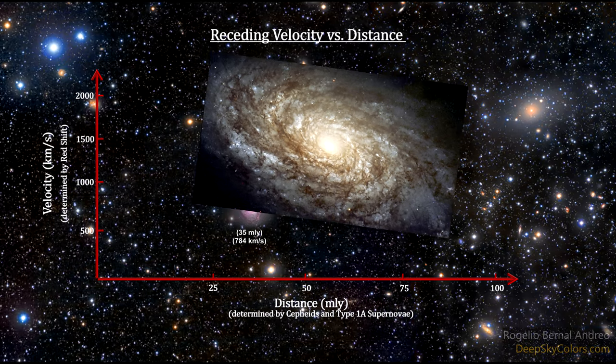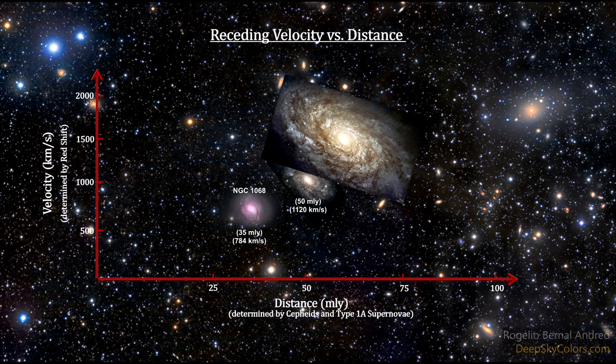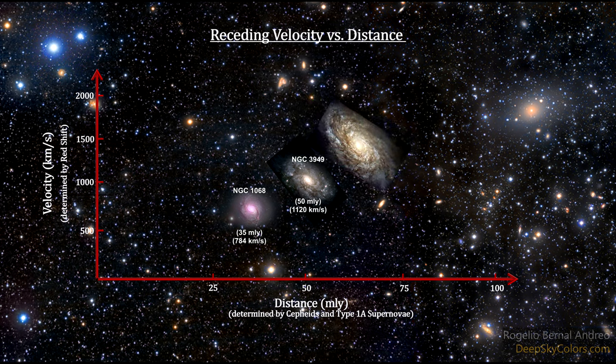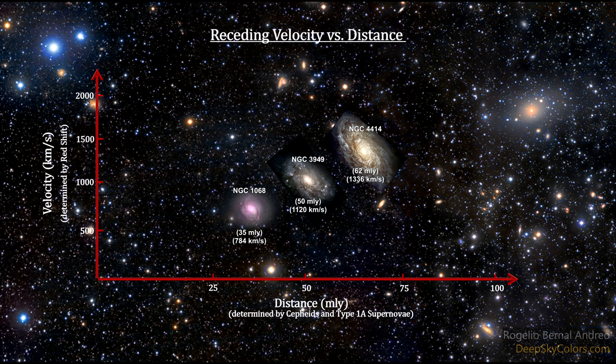NGC 4414, a galaxy studied by the Key Project on extragalactic distance scales, is 62 million light years away and receding at 1,336 kilometers per second.